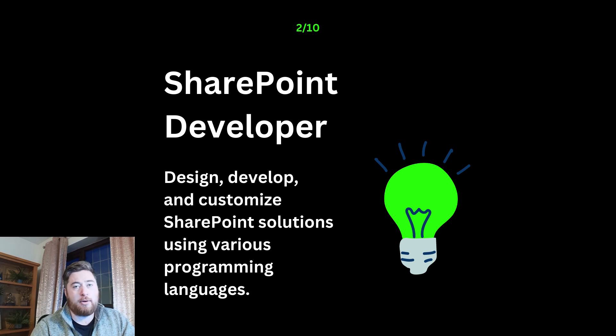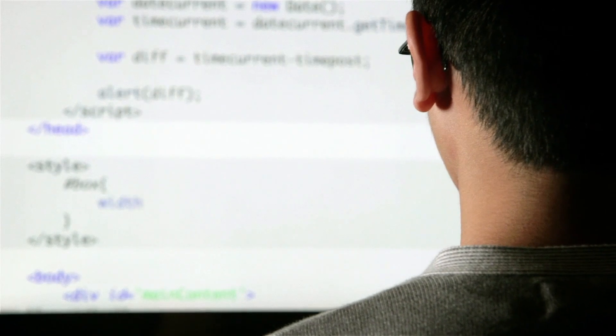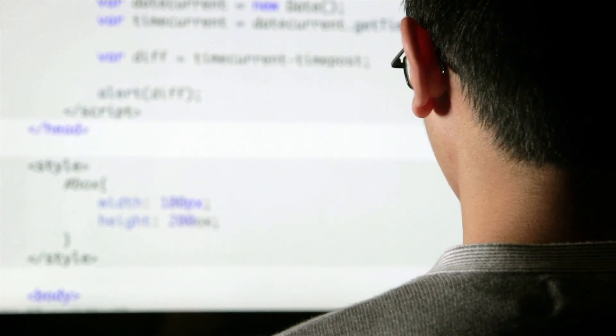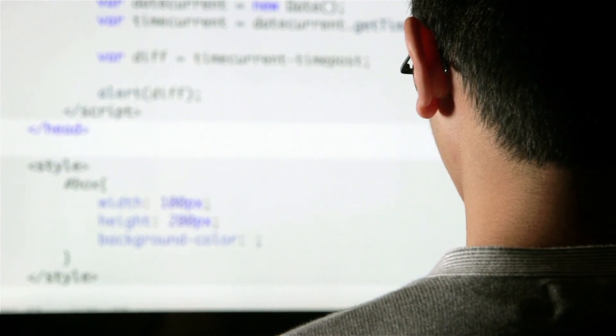The next role is a SharePoint developer. There are almost two different branches of this: what I would call a pro-code SharePoint developer and a low-code SharePoint developer. Be very careful when looking at job specs about what types of programming languages or technologies they want you to use, because that will help guide which type it is. A lot of job specs don't say pro-code or low-code, but you can guess by the things they're talking about. If they mention Power Automate, Power Apps — things like that — it could well be low-code. If they're talking about .NET, C#, JavaScript, any of those things, you're looking at more of a pro-code developer.